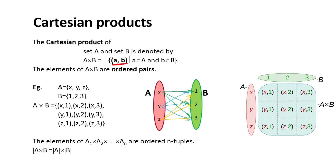For example, set A is {X, Y, Z} and set B is {1, 2, 3}. Then all the possibilities of ordered pairs will be: (X,1), (X,2), (X,3), (Y,1), (Y,2), (Y,3), (Z,1), (Z,2), (Z,3). Elements from set A are present at the first position and elements from set B are present at the second position.